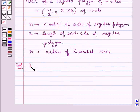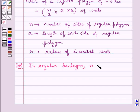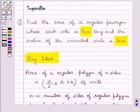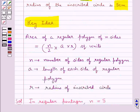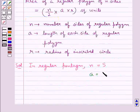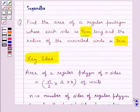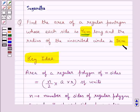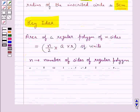Now we are given a regular pentagon, so n, that is the number of sides, is equal to 5. We are given that each side is 4 cm long, so a is equal to 4 cm. Also, the radius of the inscribed circle is 5 cm, so r is equal to 5 cm.